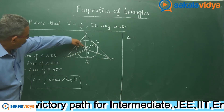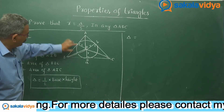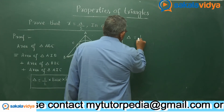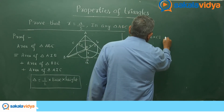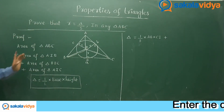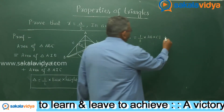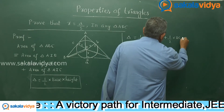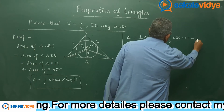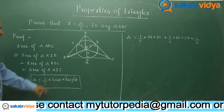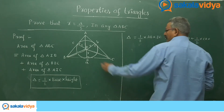AB is nothing but small c, and the height is small r. So we can write: half times c times ID, plus area of triangle BIC which is half times BC times IE — that is half times a times r — plus area of triangle AIC which is half times CA times IE, that is half times b times r.